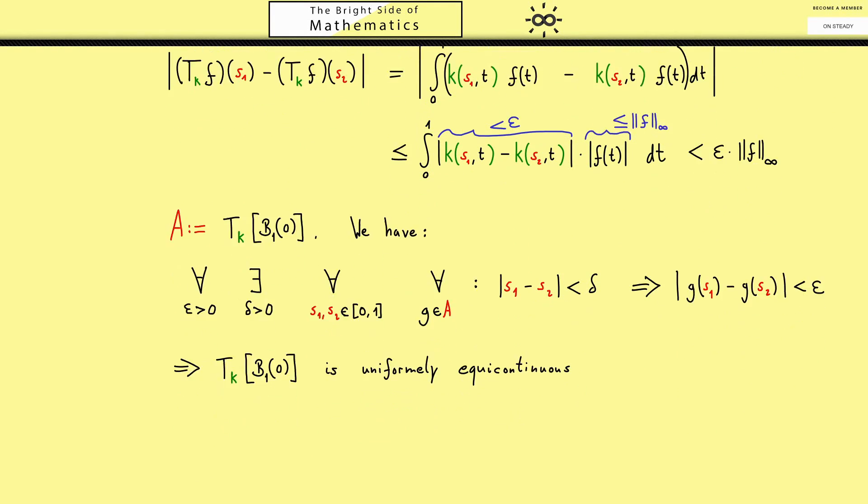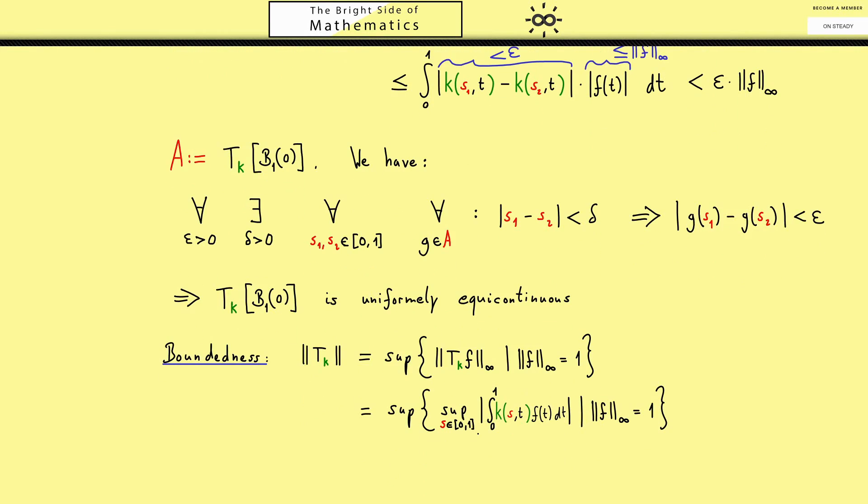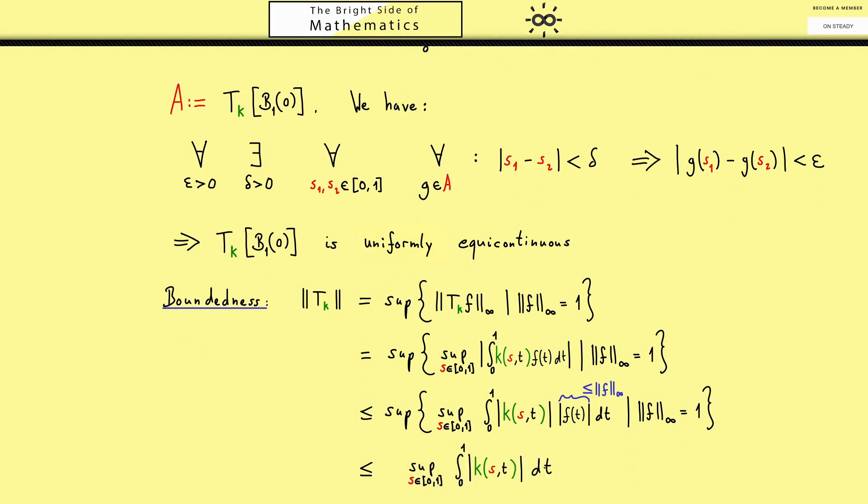At this point you might already guess that we want to apply the Azela-Ascoli theorem. Therefore another step we have to do is showing that the whole set is bounded, or in other words that the operator is bounded. Hence let's calculate the operator norm. By the definition of the supremum norm, we calculate the absolute value of the integral. We can pull in the absolute value into the integral and get an inequality. With this we are almost finished because the last part here is less or equal than the supremum norm of f, which is by assumption just 1. This is also less or equal than the supremum norm of our function k. It's not important what the number is exactly, it's only important that it is constant, because then we know that T_k is a bounded operator.